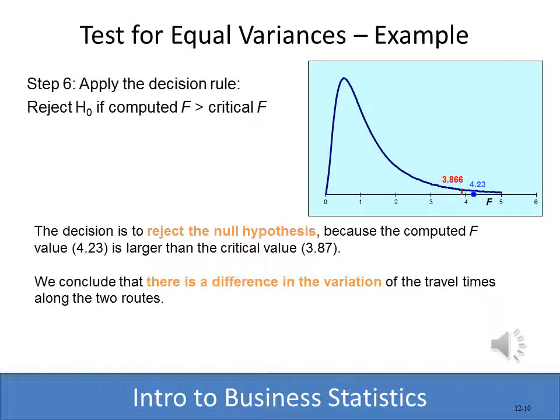When deciding whether to reject or not reject the null hypothesis the rules are the same — we compare the critical value to the computed statistic. Our critical value was 3.866 and the F statistic we computed was 4.23. Since 4.23 is outside the do-not-reject area, we reject the null hypothesis and conclude that there is a difference in the variation of the two routes.